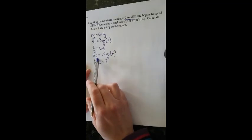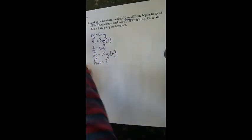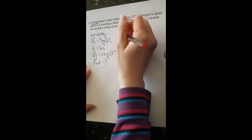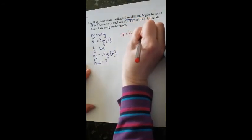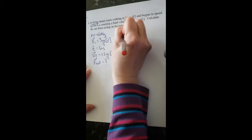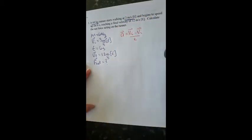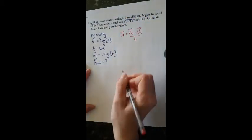When I have VI, VF, and T, I can use the formula A equals VF minus VI divided by T. I can use that formula. So let's plug in the information.